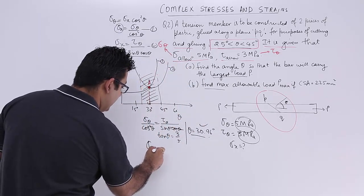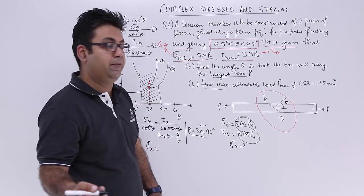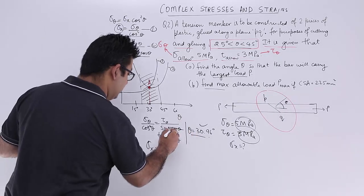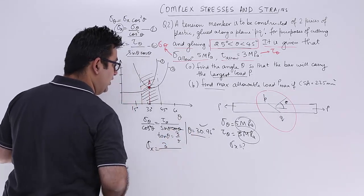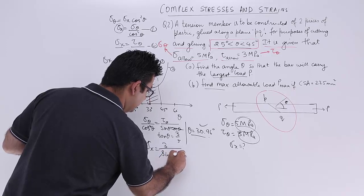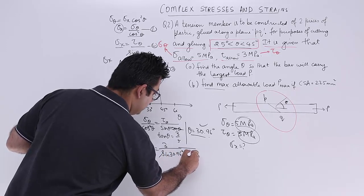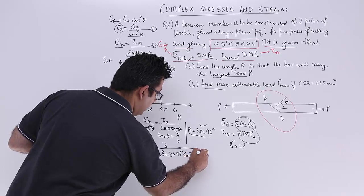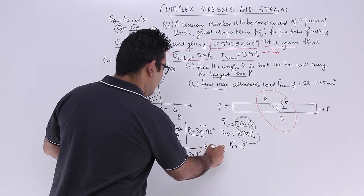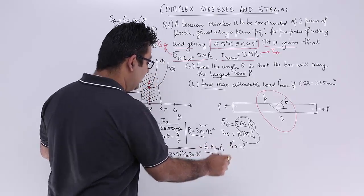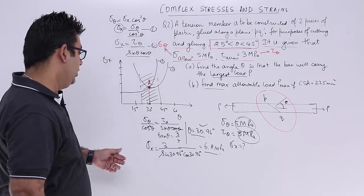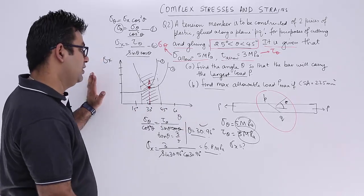So theta is almost 31 degrees. To get the value of sigma x now, the maximum sigma x that can be produced at this particular angle would be tau theta, which is 3, upon sin 30.96 upon cos 30.96. When you solve that, you get a value of 6.8 MPa.